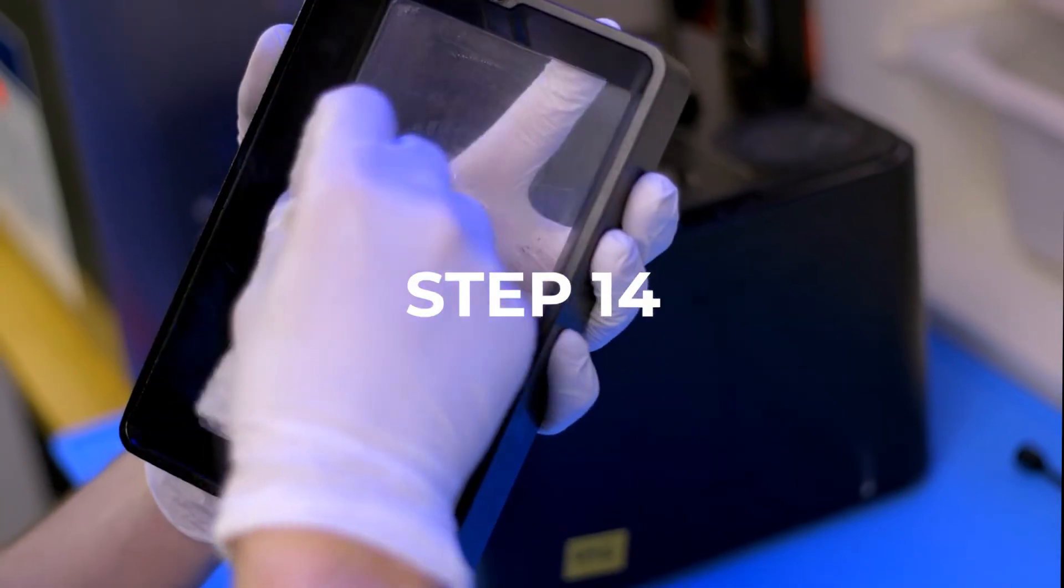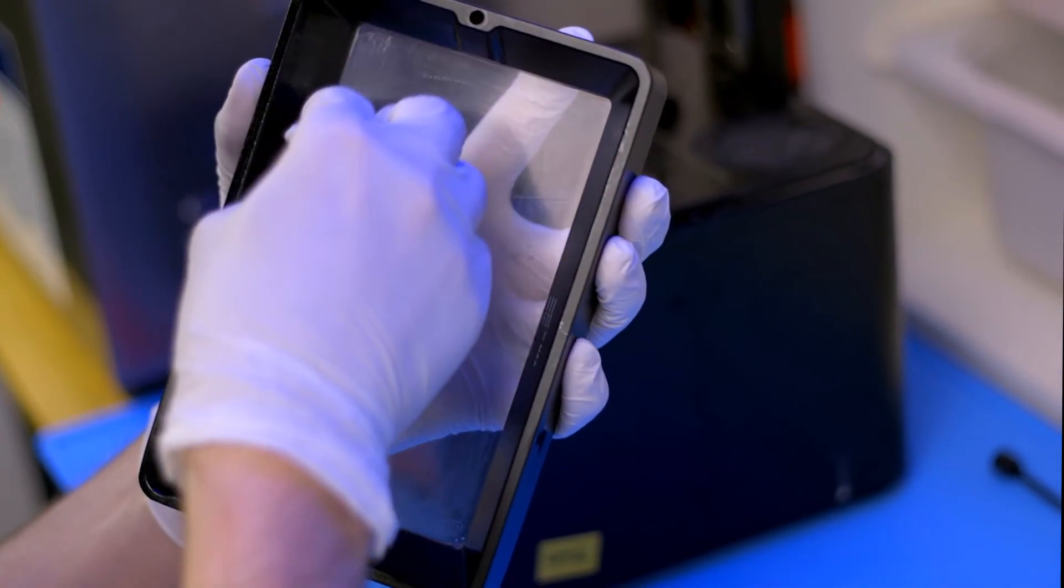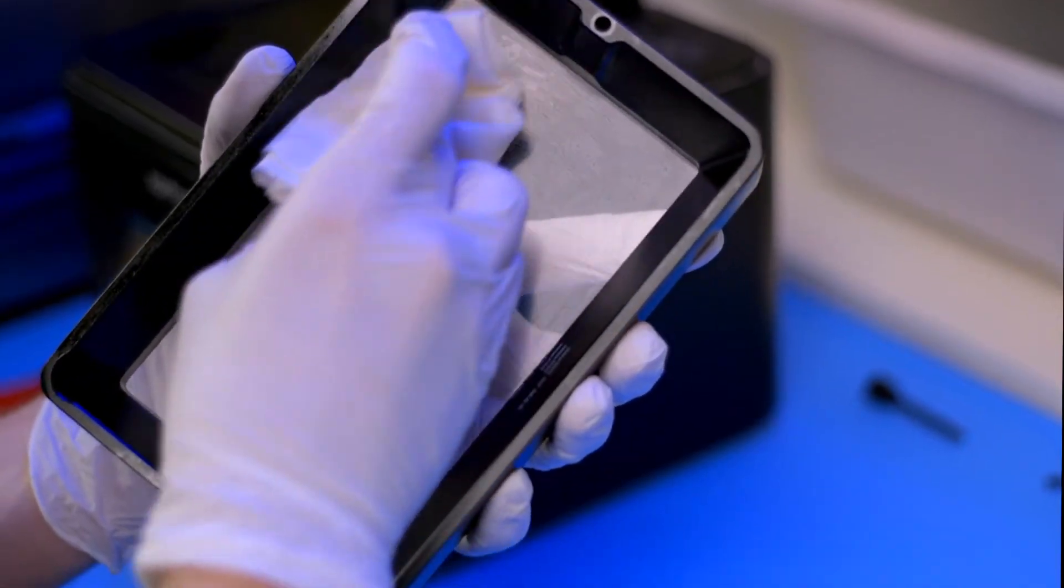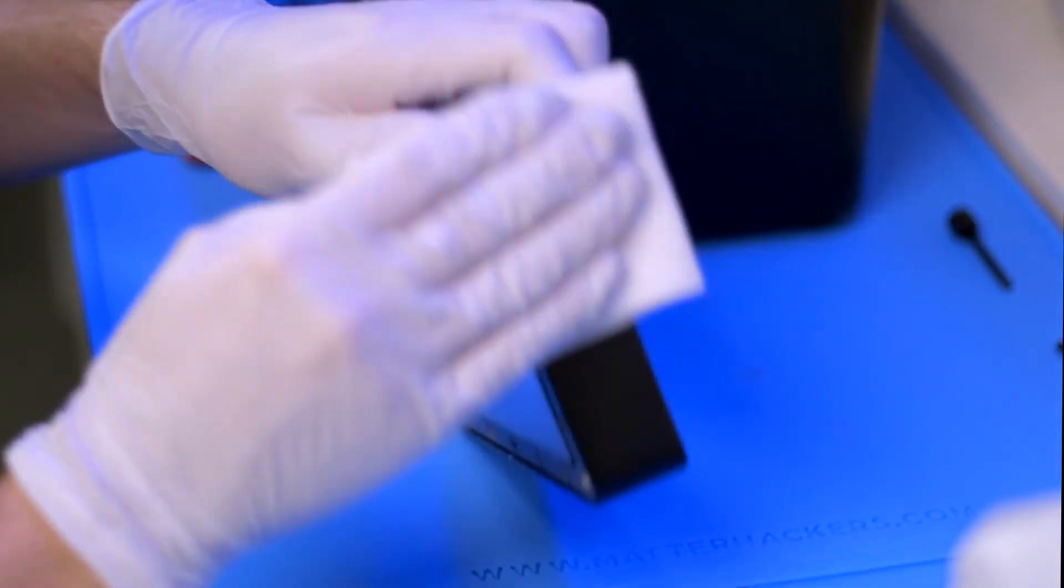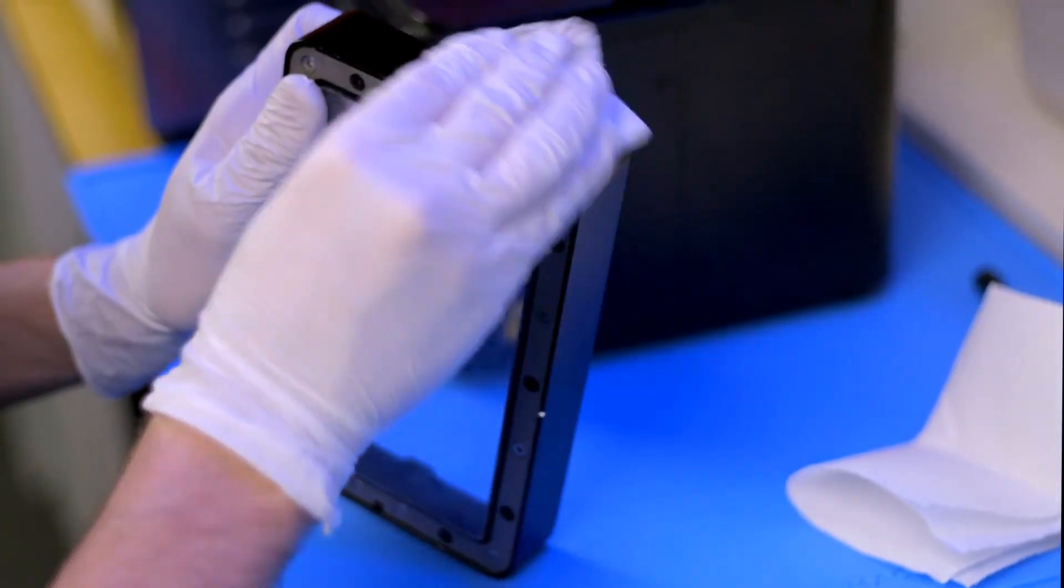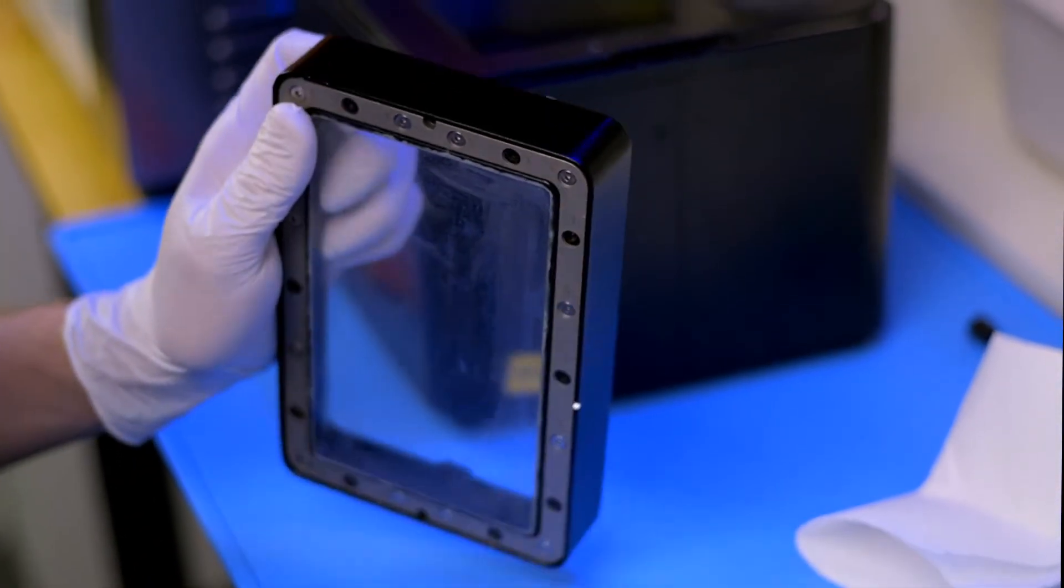Step 14: Clean the inside of the vat using dry paper towels then an isopropyl alcohol moistened paper towel. Step 15: For cleanliness, clean the outside of the vat and the inside of the resin printer itself in the same way.